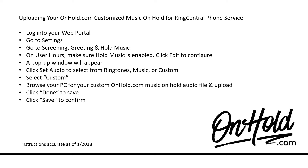A pop-up window will appear. Click Set Audio to select from Ringtones, Music or Custom. Select Custom. Browse your PC for your OnHold.com Music OnHold audio file and upload. Click Done to save. Click Save to confirm.